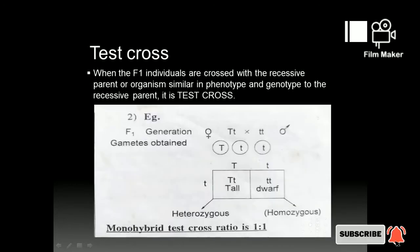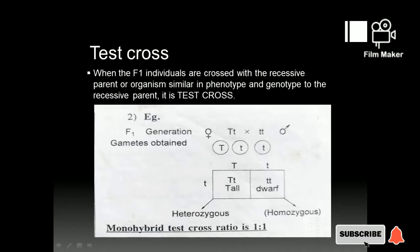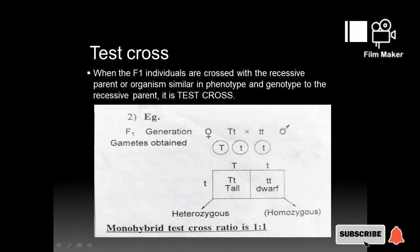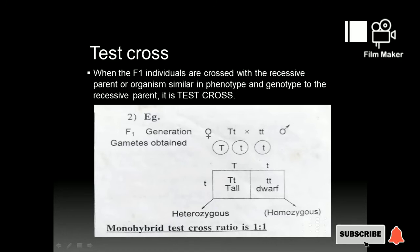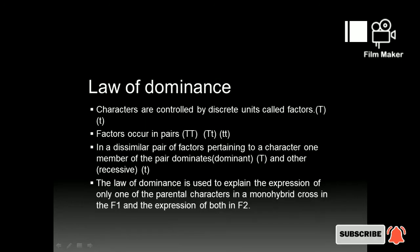When the F1 individuals are crossed with the recessive parent or organism, similar in phenotype and genotype to the recessive parent, it is called a test cross. If you have a tall plant, you can use a recessive parent for crossing. This cross will show this type of crossing, which demonstrates the law of dominance.